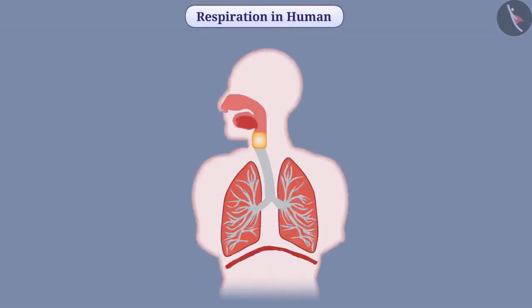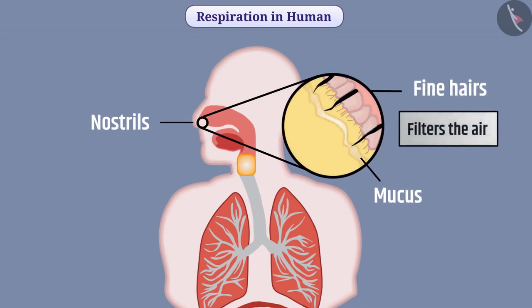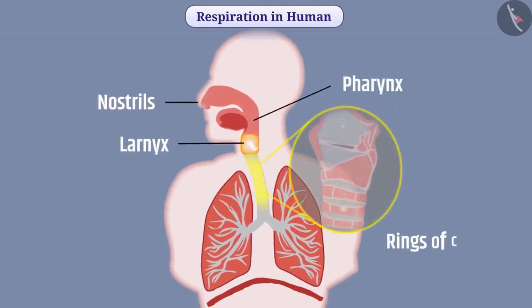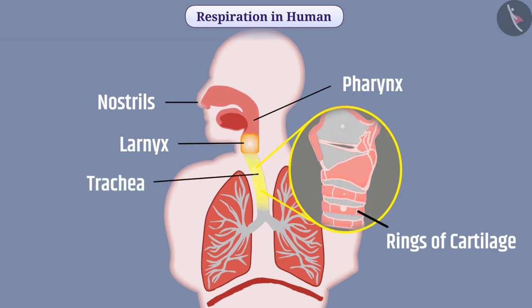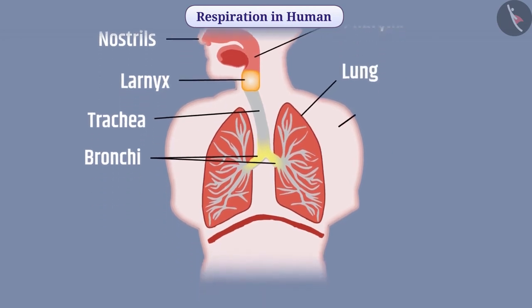In different terrestrial organisms, oxygen is absorbed by different organs. In humans, air enters inside the body through the nostrils. Nostrils consist of layers of fine hairs and mucus, which filter the air so that dust and impurities do not enter the body. After this, the air reaches the trachea via the pharynx and larynx. Rings of cartilage are present in the trachea to ensure the air passage does not collapse. Two bronchi originate from the trachea, and one bronchus enters into each lung. Inside the lung, the bronchus divides into bronchioles.